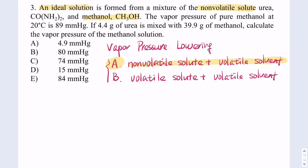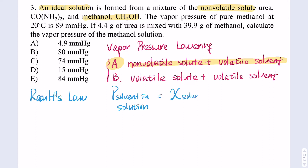For today's example question, we have a non-volatile solute plus a volatile solvent. In that case, we're going to use Raoult's Law to solve the question. Raoult's Law states that the vapor pressure of the solvent in the solution equals the mole fraction of the solvent times the pure vapor pressure of the solvent.